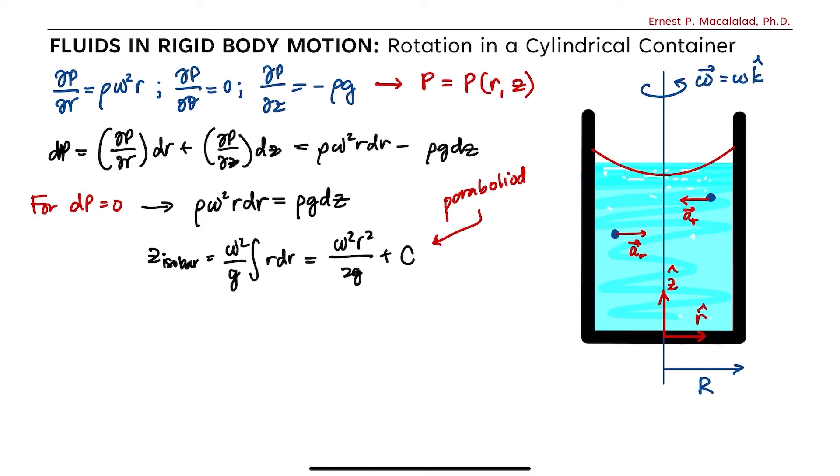If we're going to use the boundary condition at the lowest points of the free surface, that is the height of these points, and let's call that hc. Mathematically, this is z at r equal to zero is equal to hc. Therefore, the equation of the free surface is given by z surface equals omega squared over 2g times r squared plus hc.